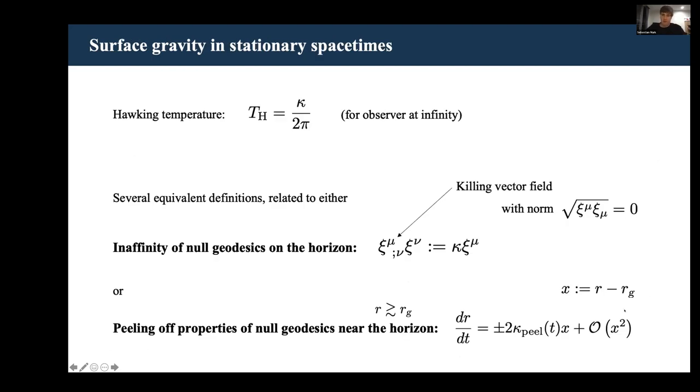Now we've covered all of the context that we need to look at surface gravity. Surface gravity is actually only defined unambiguously in stationary spacetimes where we have this relation to the Hawking temperature of a stationary black hole as seen by an observer sitting at infinity.